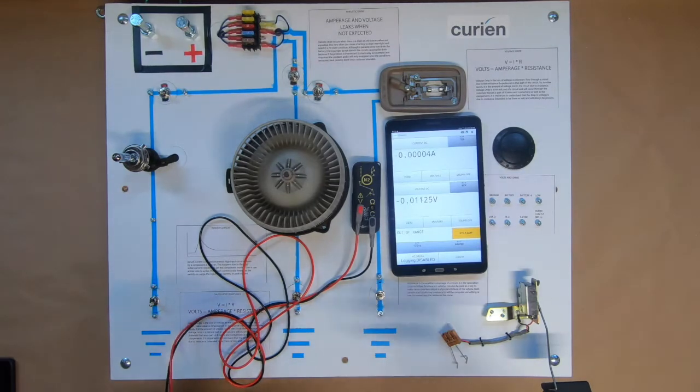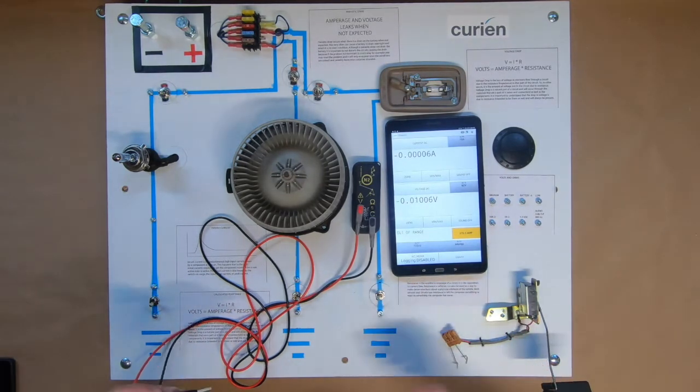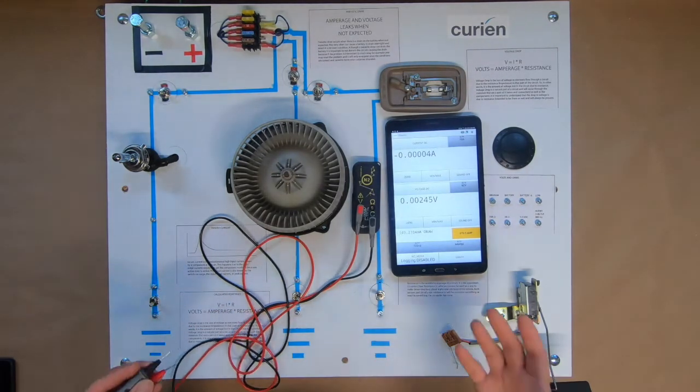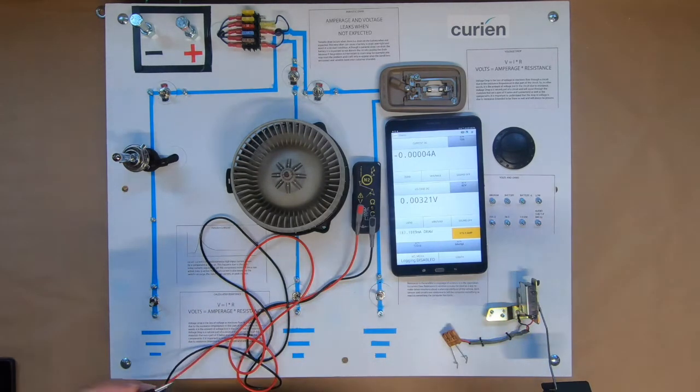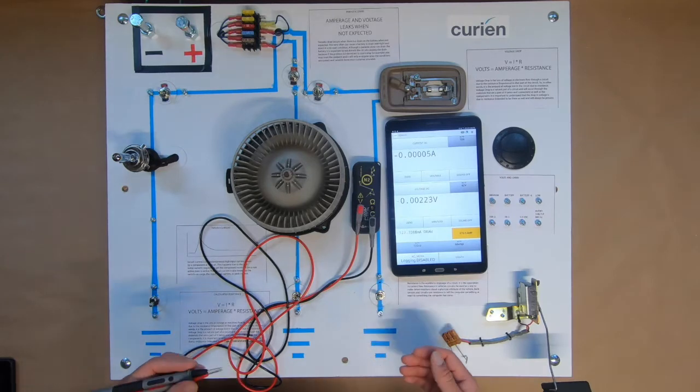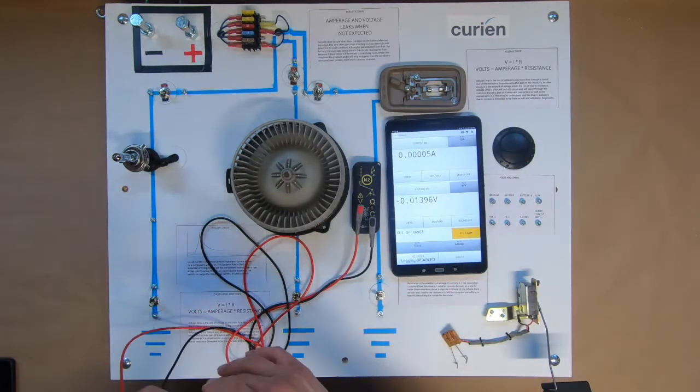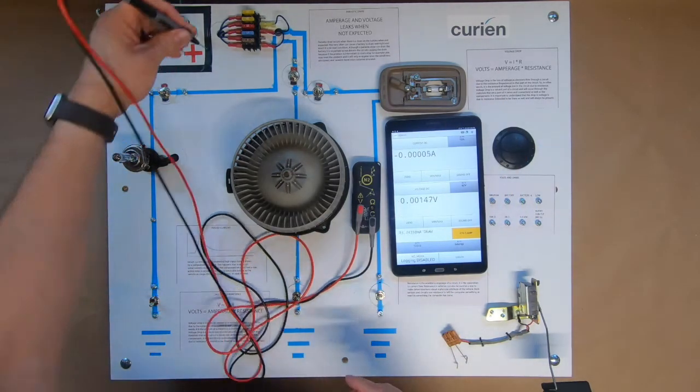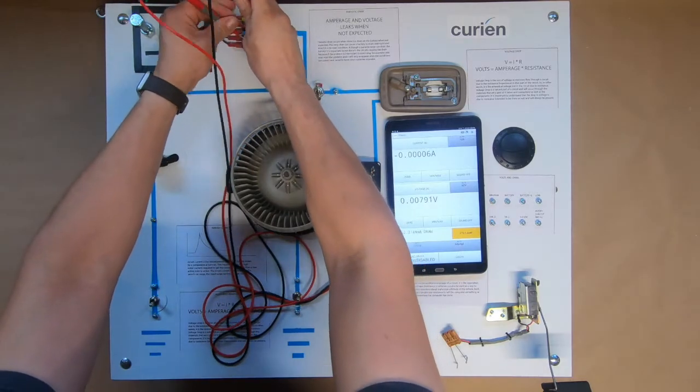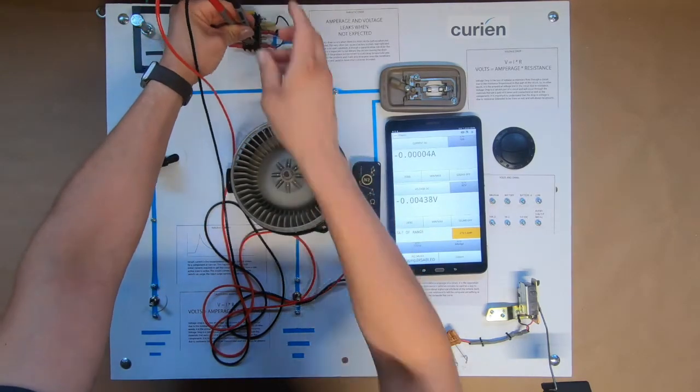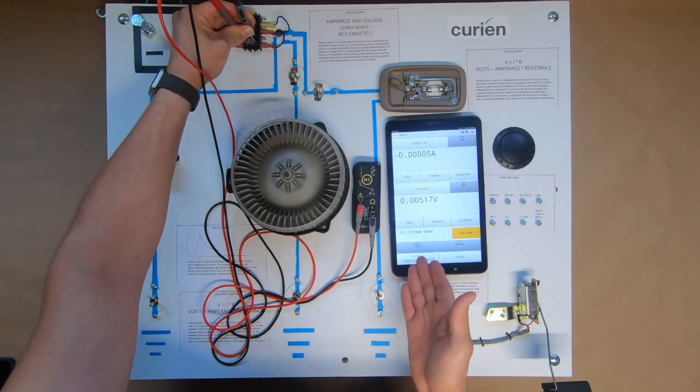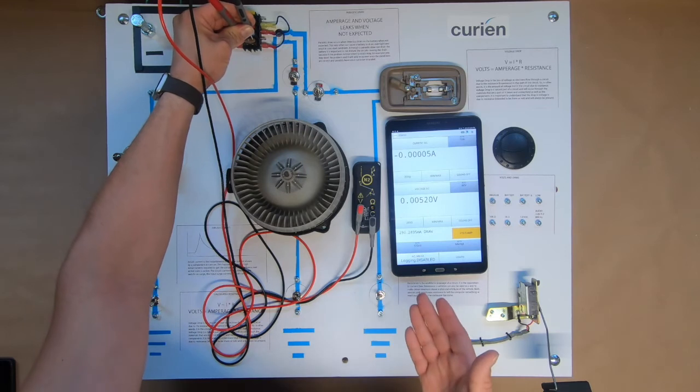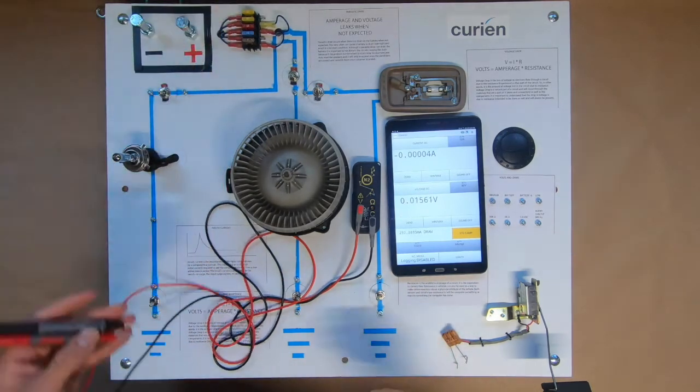Now going to a situation where we would have had parasitic draw that wasn't necessarily seen in the vehicle or something that we're noticing if we're just going through our fuse checking. I want to show you this, the bulb is off, or at least it appears to be off. But let's take a look at this circuit one more time. And as we connect there and I stop moving, there is almost 300 milliamps or that would be 0.3 amps flowing through that circuit.